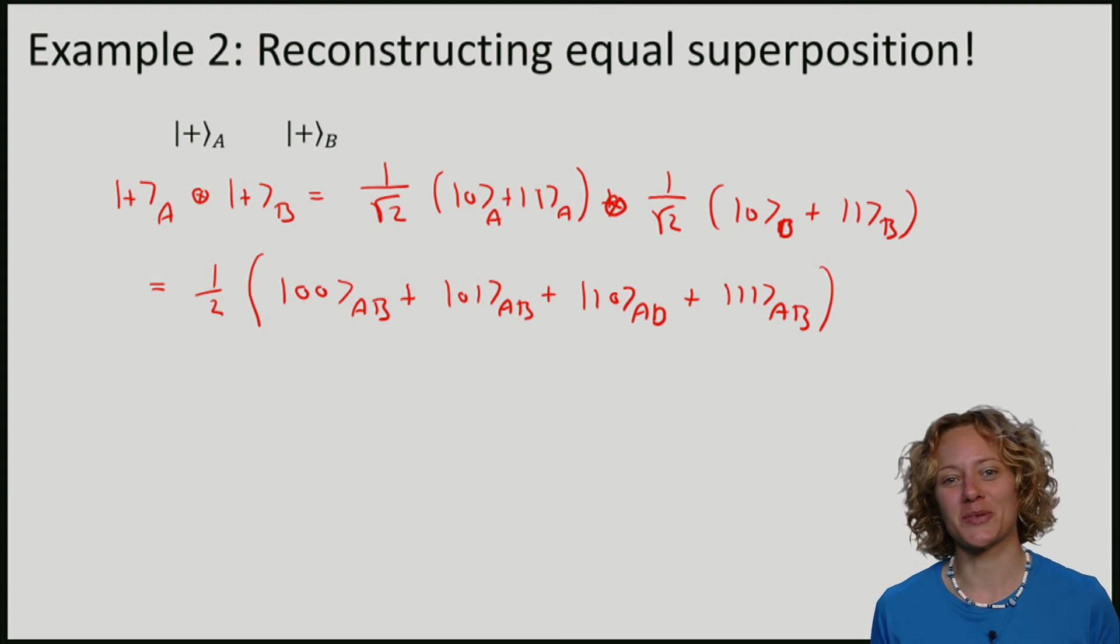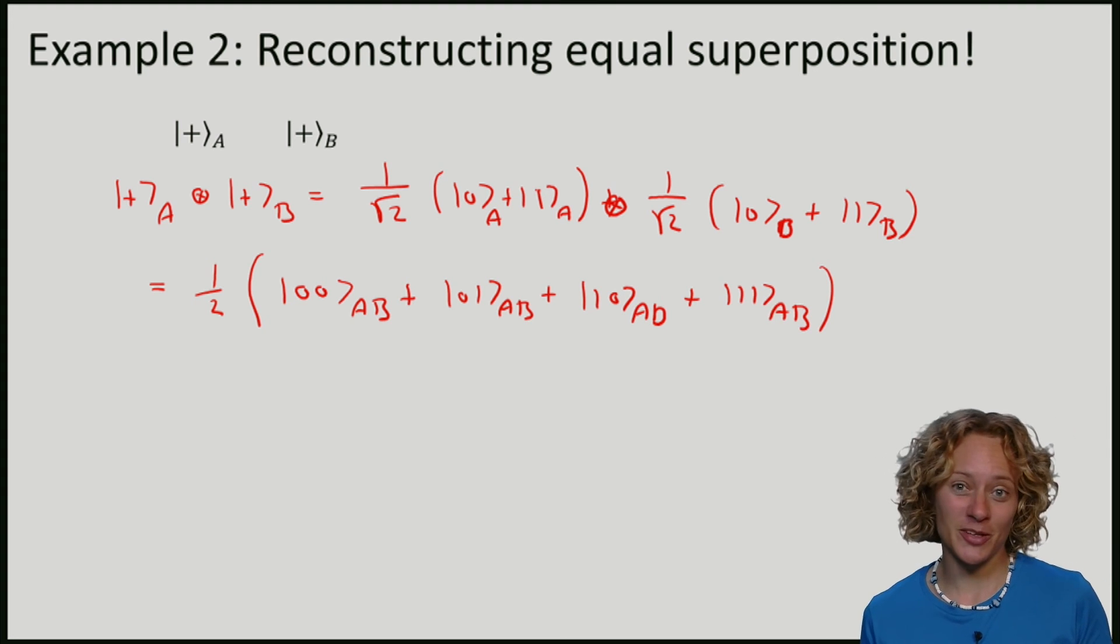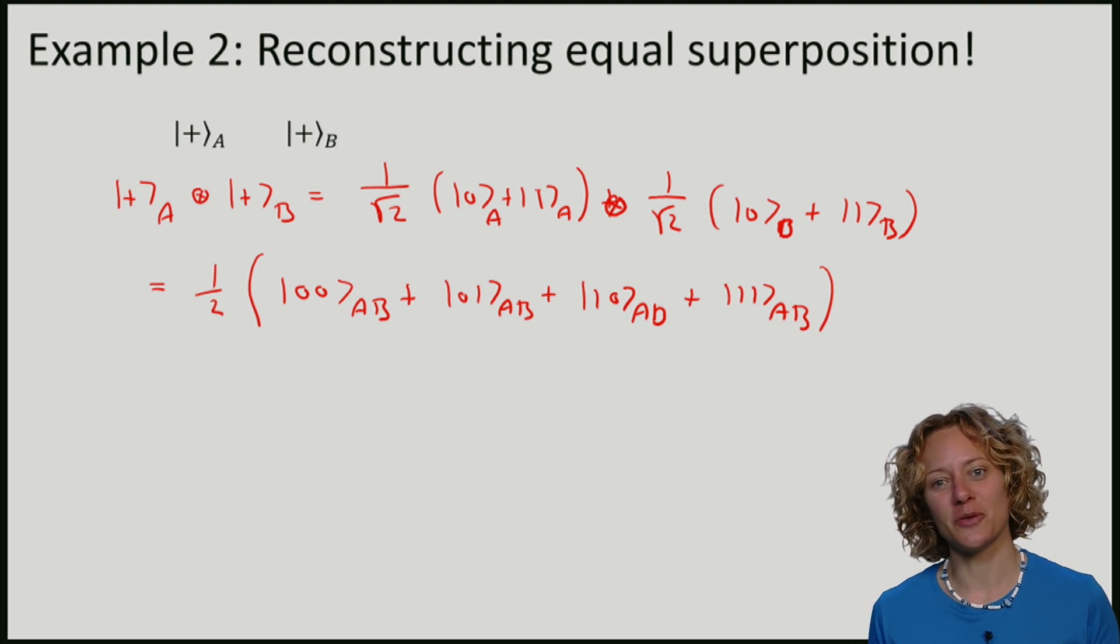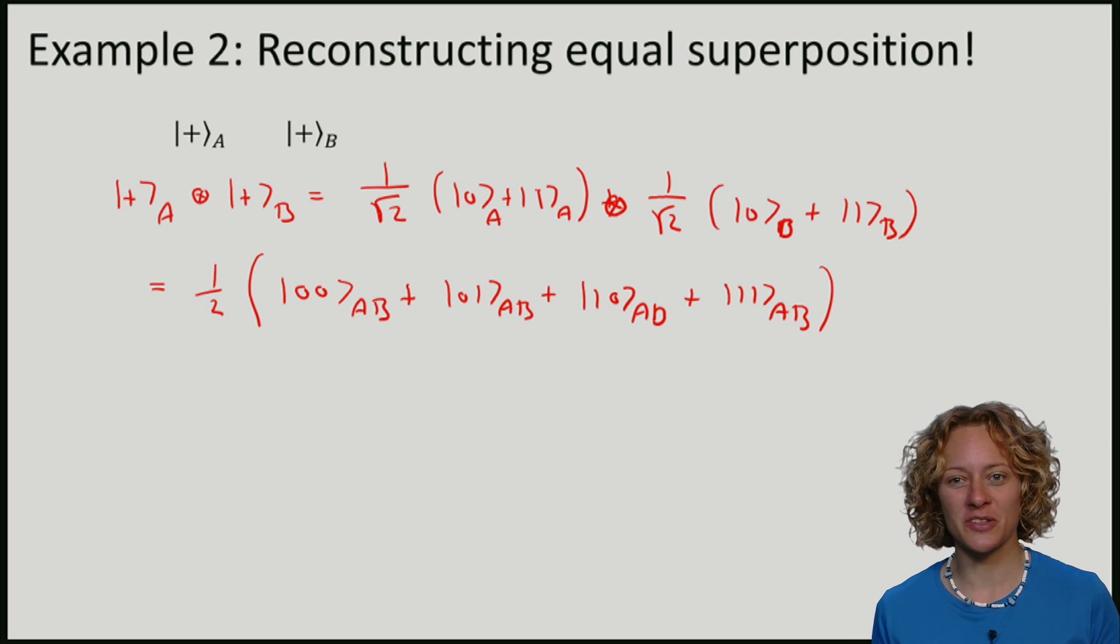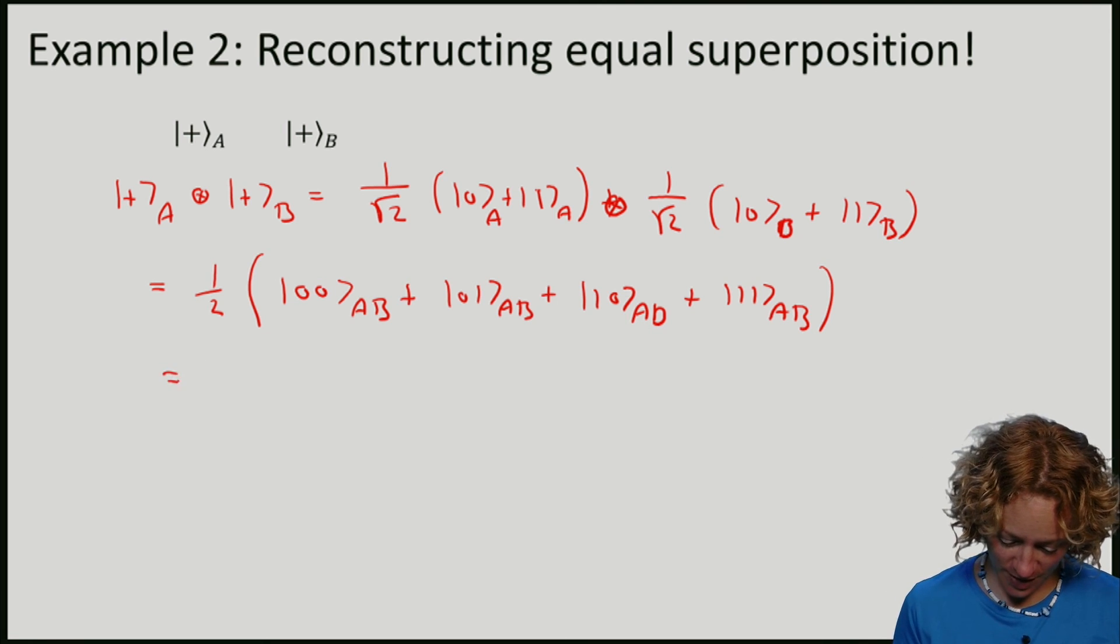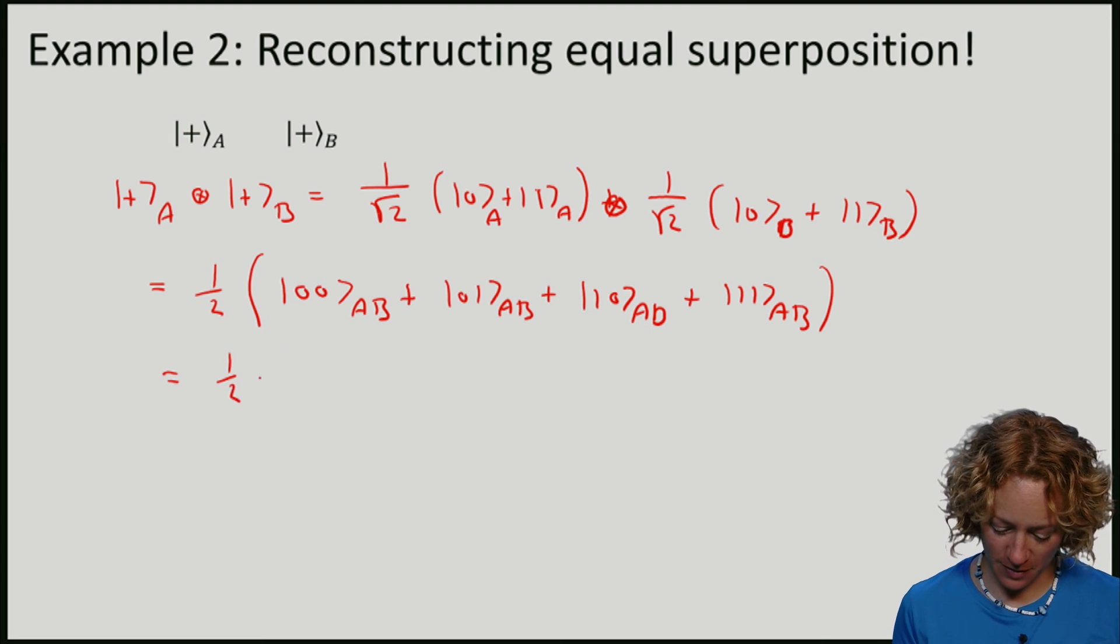If you want, we can also write this as a vector, and this is going to be quite easy because we already know what this is. In fact, we've seen it before—it's the equal superposition of the vectors of the standard basis for two qubits, which, as we've calculated before, is just 1/2 times (1, 1, 1, 1).